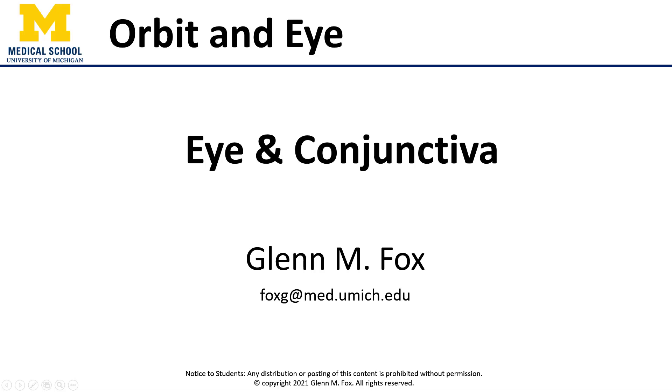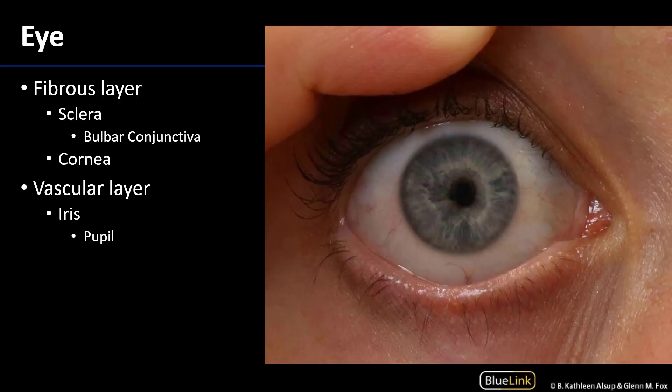Let's talk about the eye and conjunctiva. Recall that the eye consists of three layers: a fibrous layer, a vascular layer, and a neural layer surrounding an inner part.